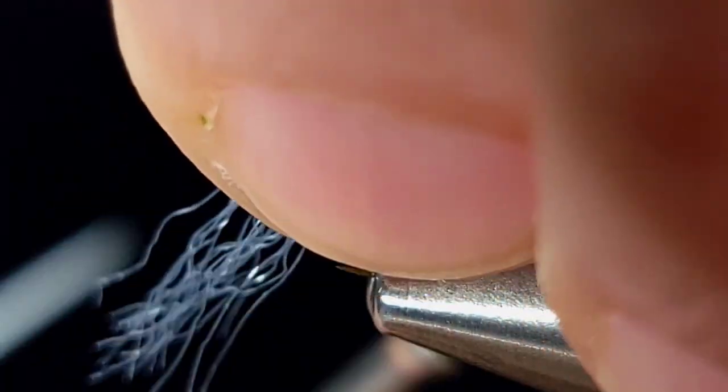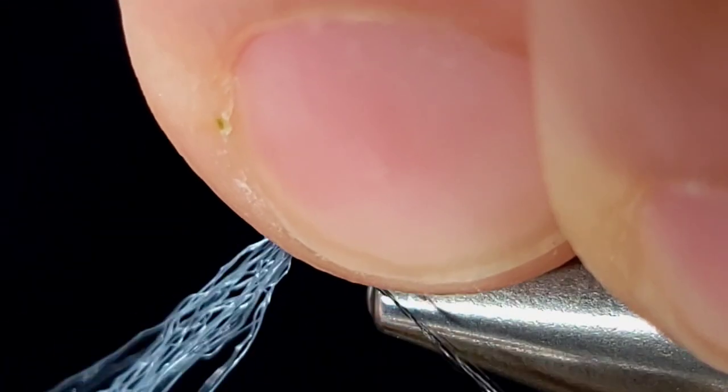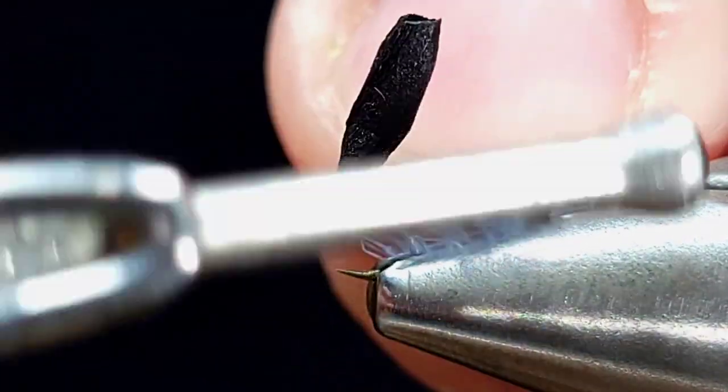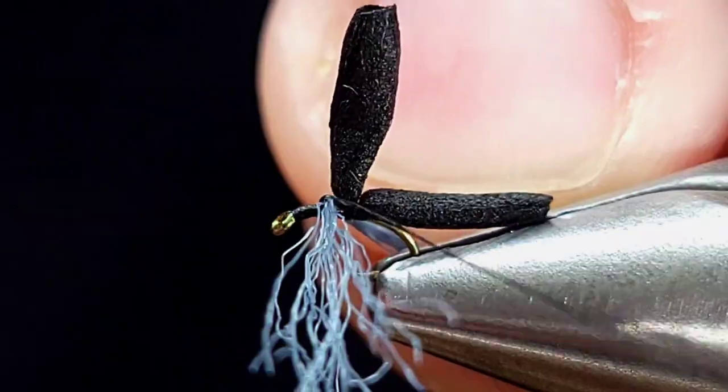I'm going to secure it by figure-eight or X wrapping, whatever you want to call it. So I'm going to go two wraps over, and then I'm going to change directions and two wraps back.